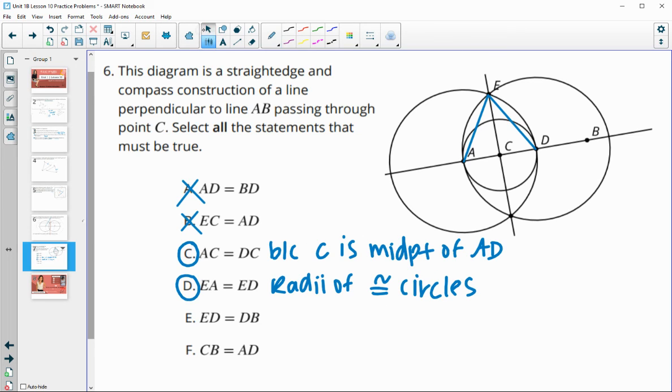Option E: is ED equal to DB? B is not on the edge of the circle, so DB is not a radius, so this one would be false.